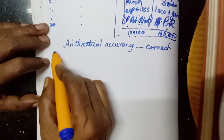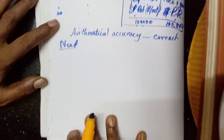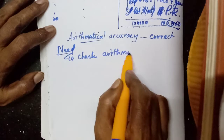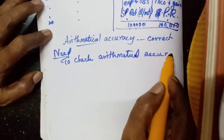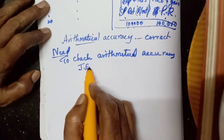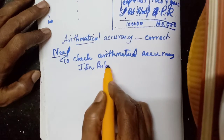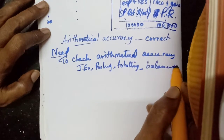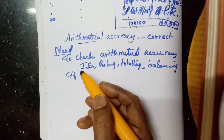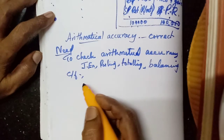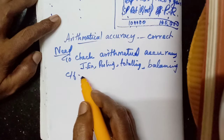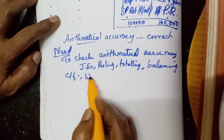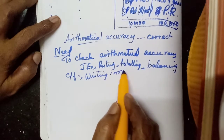Now, why are we preparing this? What is the need for preparing the trial balance? The first purpose is to check the arithmetical accuracy. That means checking whether the calculations — the amounts written in journal entries, the posting in ledger accounts, the totalling, balancing, and carrying forward of ledger accounts — are all done correctly.